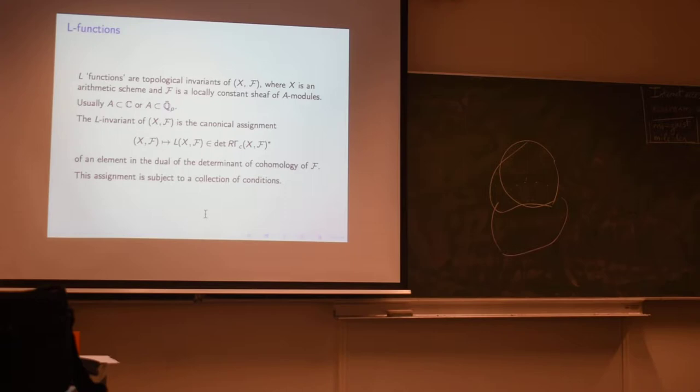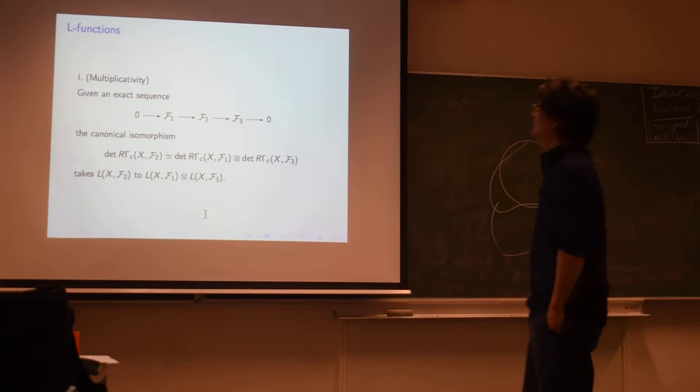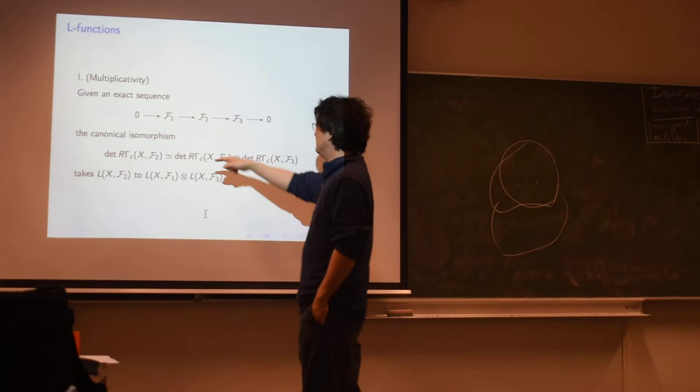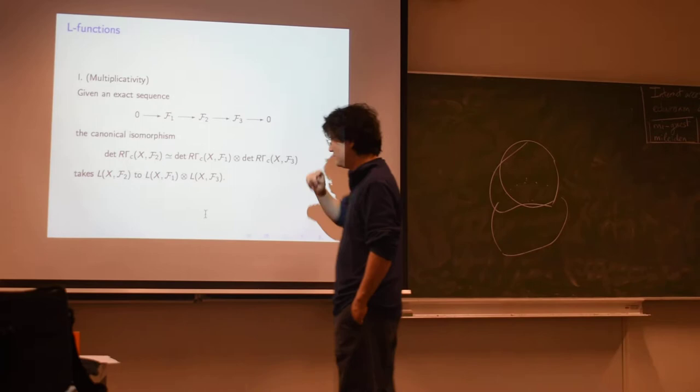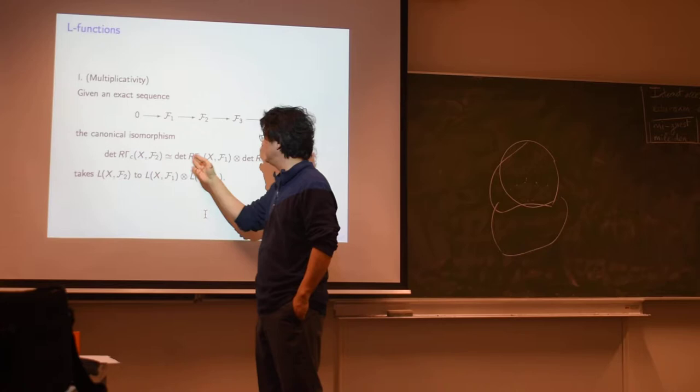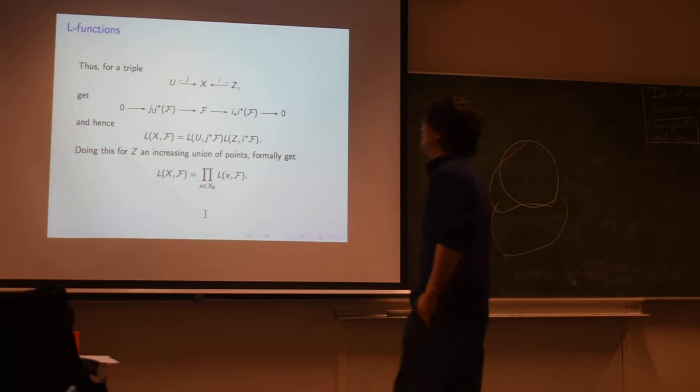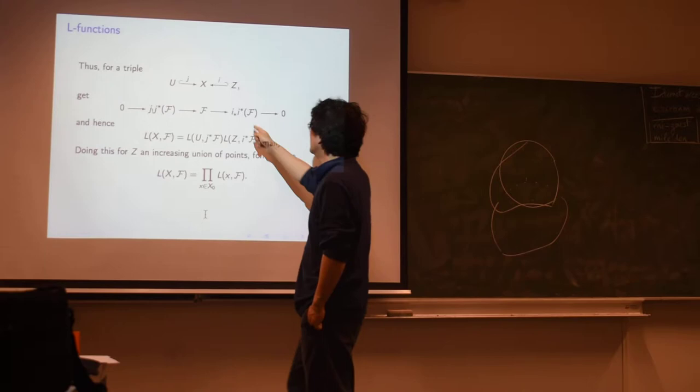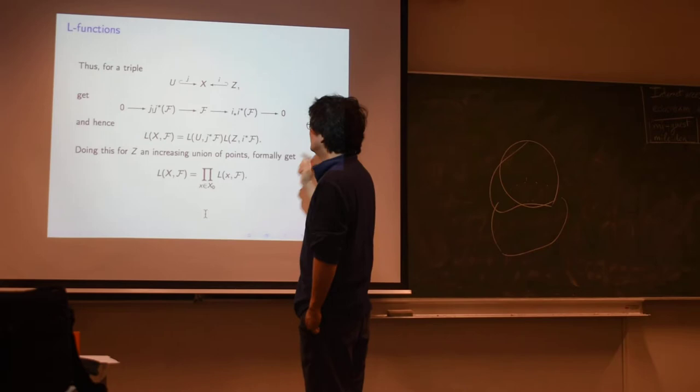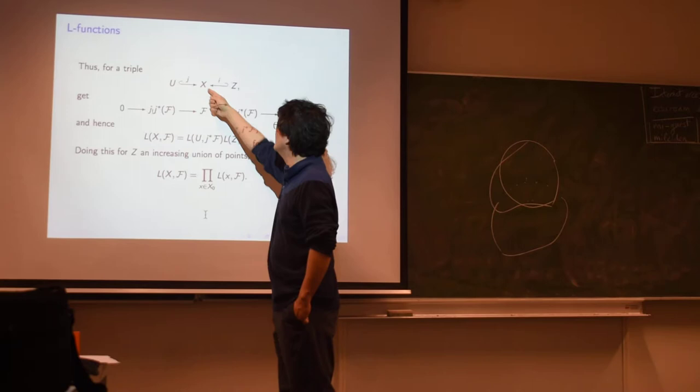So this is subject to a number of conditions. There's a multiplicativity condition that if you have an exact sequence of sheaves, then you get an isomorphism of determinant of cohomology, the middle thing, to the tensor product of determinant of either side. And then this canonical isomorphism should take the element here to the product of the element on either two sides. So that's the multiplicativity. So this has lots of consequences. So for example, if you have a triple of a scheme, an open subscheme, and a closed subscheme, a triple like that, then by looking at the exact sequence of sheaves like this, what you get is a multiplicativity of L-functions of X as a product of the one on U and the one on Z.